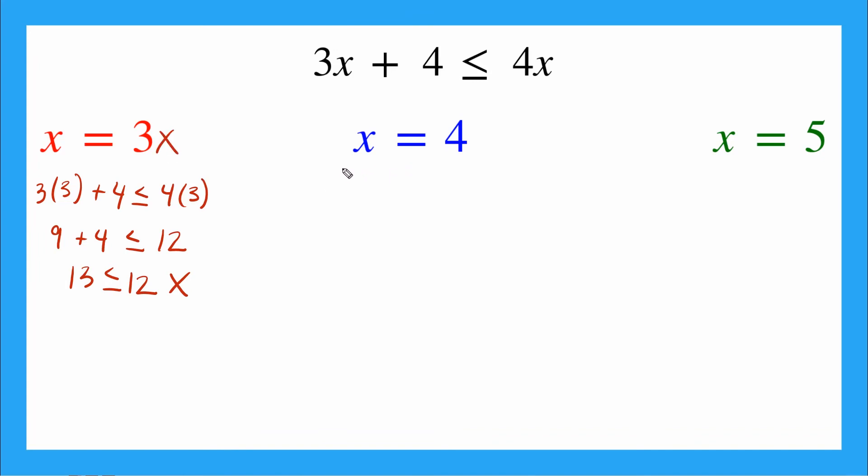Next one, x equals 4. Same thing, I'm going to use substitution. I have 3 times 4 plus 4 is less than or equal to 4 times 4. Order of operations, multiplication comes first, I get 12 plus 4 is less than or equal to 16. Now I can go ahead and add, and I get 16 is less than or equal to 16. Is this true? Yeah, right? Because we have our or equal to sign here, and 16 is equal to 16. So that's true. And that makes x equal 4 a solution.